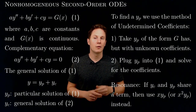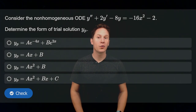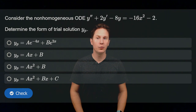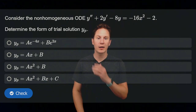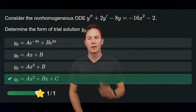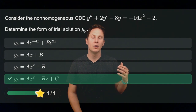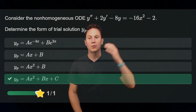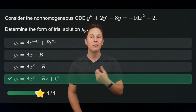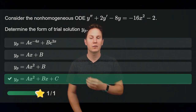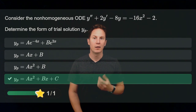Consider the non-homogeneous ODE y double prime plus 2 times y prime minus 8y equals negative 16x squared minus 2, and determine the form of the trial solution y sub p. Since the right-hand side g of x is a quadratic polynomial, the trial solution must also be a quadratic polynomial with unknown undetermined coefficients a, b, and c.